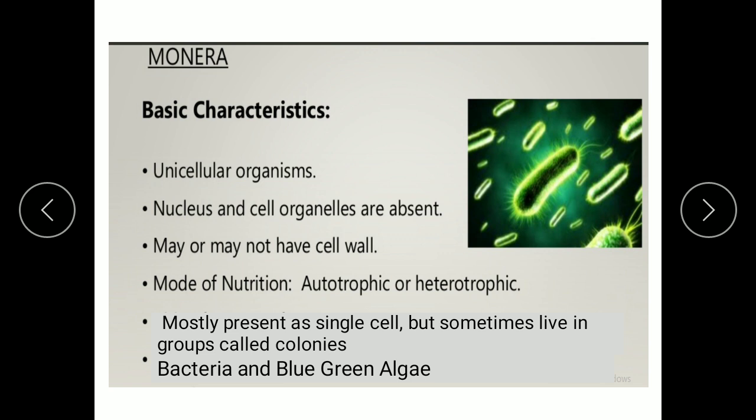Kingdom Monera consists of unicellular organisms. These organisms have no well-defined nucleus, and many of the cell organelles are also absent. They may or may not have a cell wall. Their mode of nutrition is either autotrophic or heterotrophic — that is, they can make their own food or they depend on others for their nutrition.